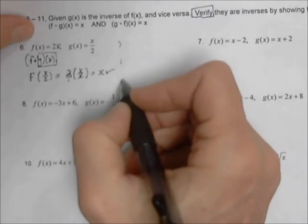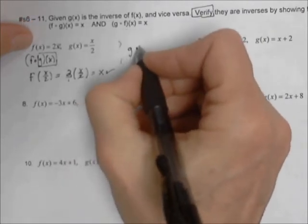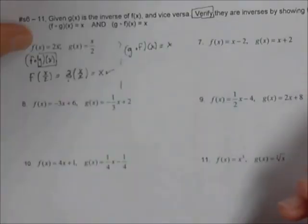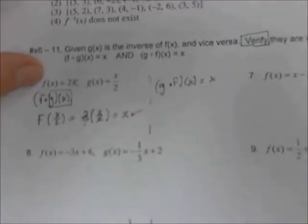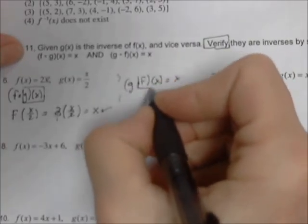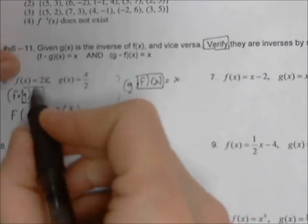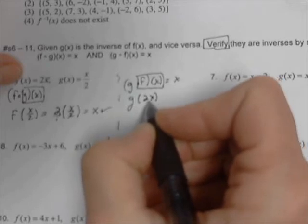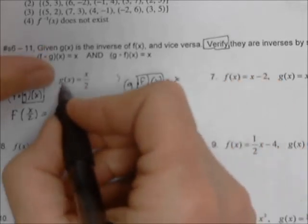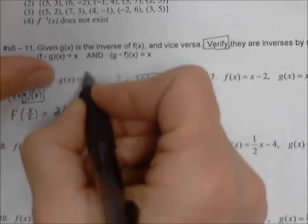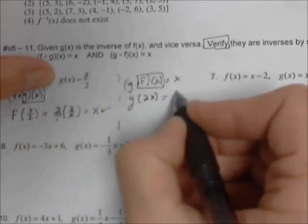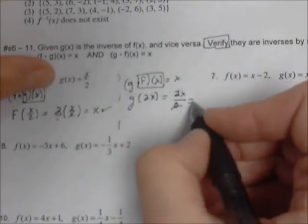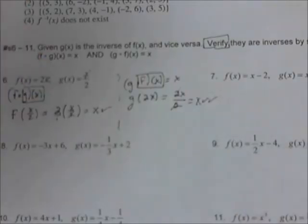The other half is showing that g of f of x equals x. We take f(x), which is 2x, and put it into g. So we do g of 2x. g of x is x over 2, so we replace x with 2x to get 2x over 2. The 2s cancel and we're left with x. That's our verification done for number 6.